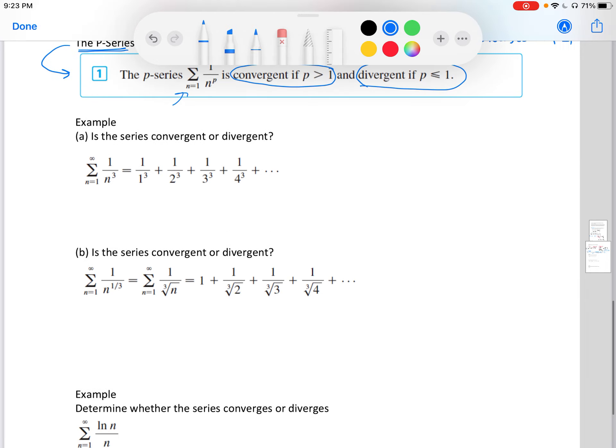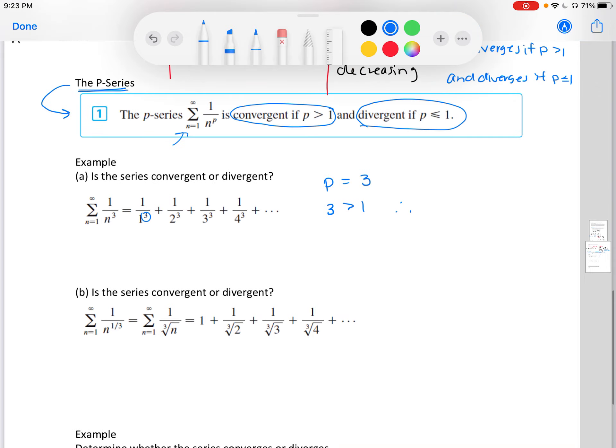So we're just looking at the exponent in our denominator. Let's take a look at this example. We have a sum of 1 over 1 to the third power, 1 over 2 to the third power, and so on. In this case, our p is 3. And since 3 is greater than 1, we can say that it's convergent.